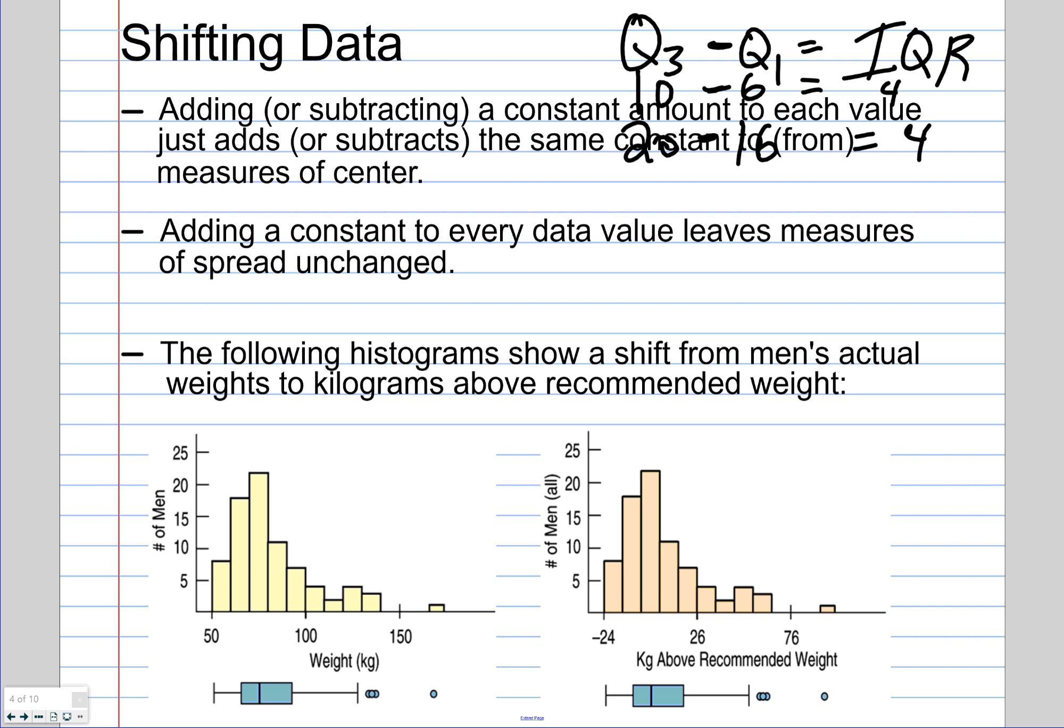Measures of spread do not change when you add or subtract. Measures of center do, because if you take all your data values and you add them by 10, you have a new center. It's going to be 10 units higher. Mean and median change. Range, standard deviation, IQR do not.